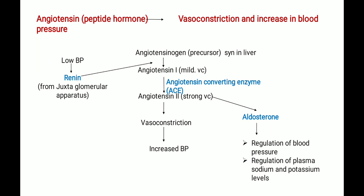Vasodilation allows blood vessels to become wider, which decreases blood pressure. So to summarize: vasoconstriction is narrowing of blood vessels, which increases blood pressure, and vasodilation is widening of blood vessels, which decreases blood pressure.